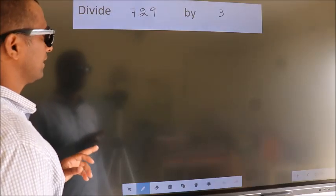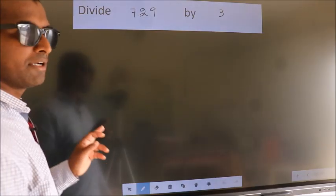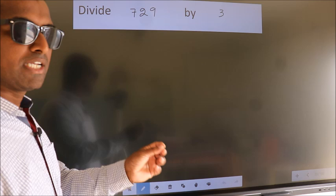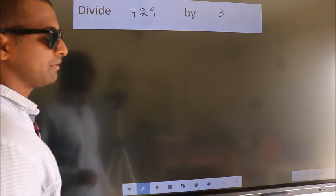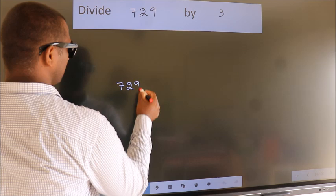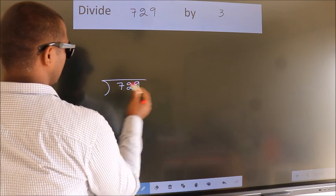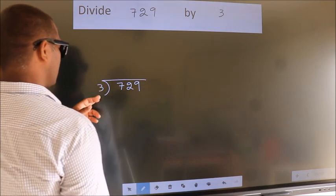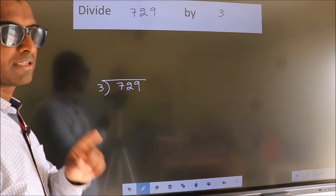Divide 729 by 3. To do this division we should frame it in this way. 729 here, 3 here. This is your step 1.